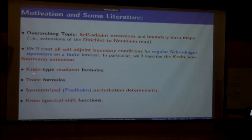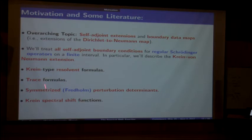I want to spend a little time on Krein-type resolvent formulas, because from there you go naturally to trace formulas where the spectral shift function appears naturally. And there are symmetrized Fredholm perturbation determinants, all very closely related topics, and we'll end up in this ODE case with the spectral shift function.